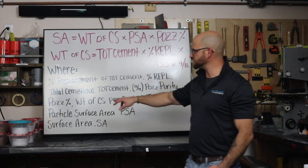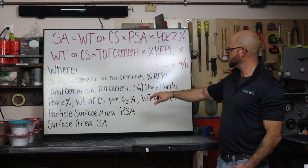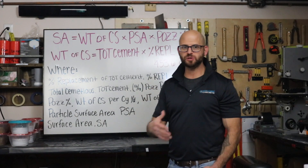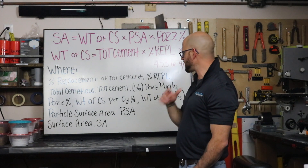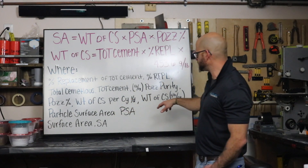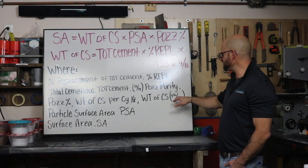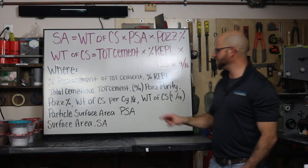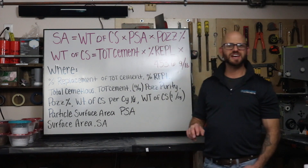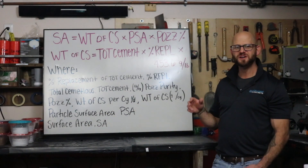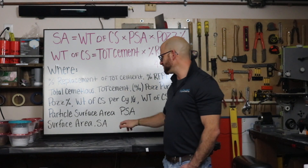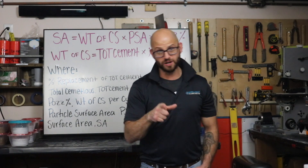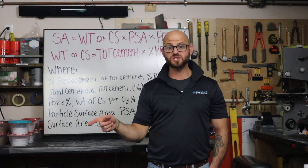Here's a summary of the variables: percent replacement of total cementitious; total cementitious in pounds per cubic yard; pozzolanic purity, normally over 99%; weight of colloidal silica per cubic yard in grams per cubic yard; particle surface area in meters squared per gram; and finally the instantaneous silica surface area in meters squared per cubic yard.